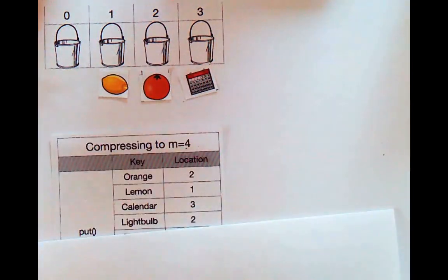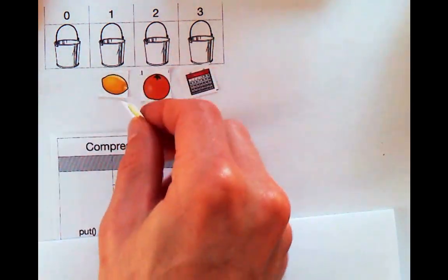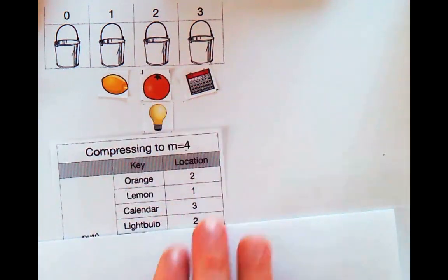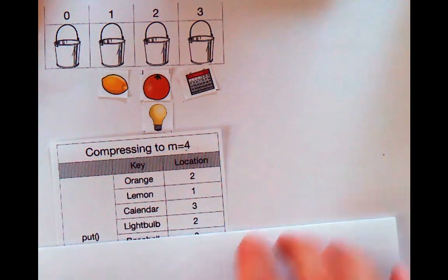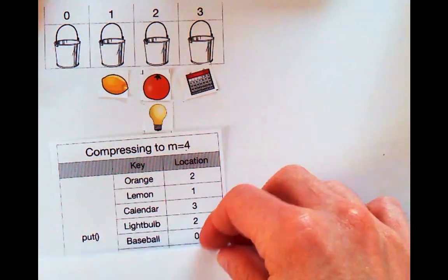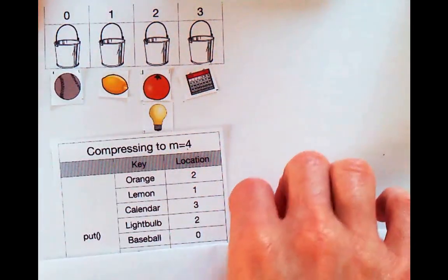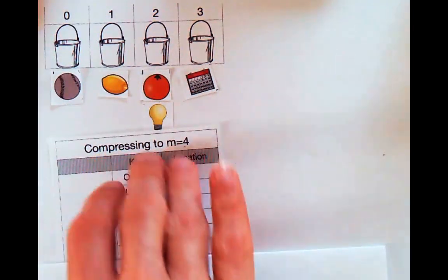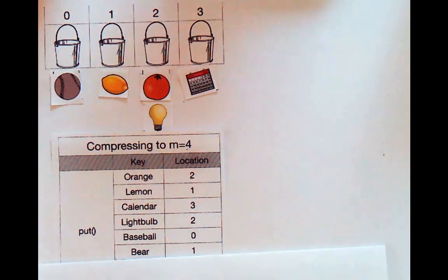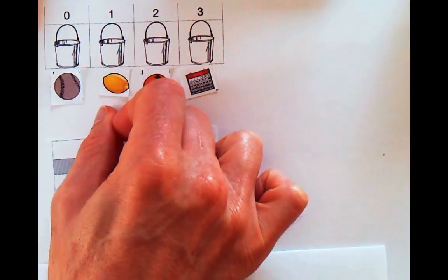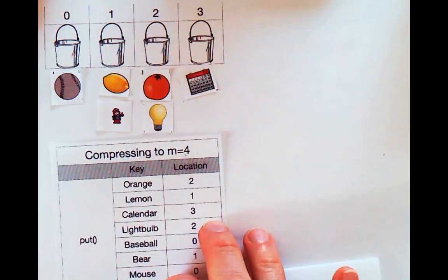Then next up is a light bulb in bucket two. So we have a collision. We have to go through all the items in our bucket and make sure that we're adding it. Then we're going to put a baseball in zero. No collisions there. And then we're going to put a bear in one. So we've got a collision. We have to make sure we're not updating an item, and then we'll append it to the end.